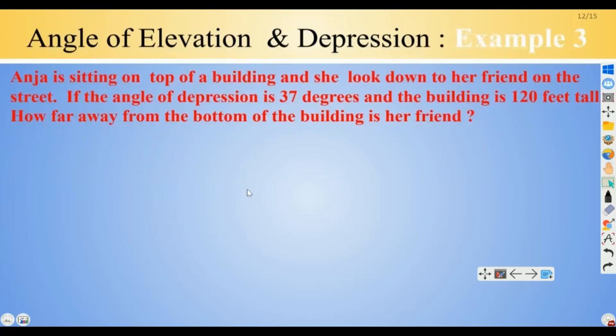Let's look at another example. Anya is sitting on top of a building and she looks down to her friend on the street. If the angle of depression is 37 degrees and the building is 120 feet tall, how far away from the bottom of the building is her friend?